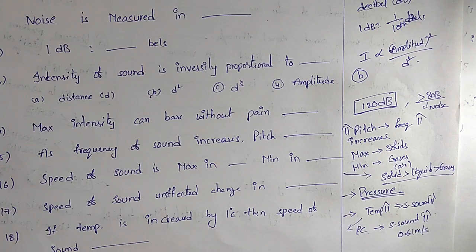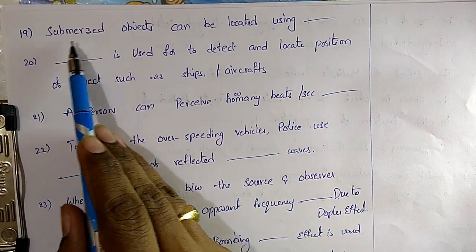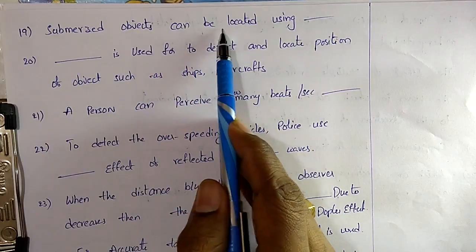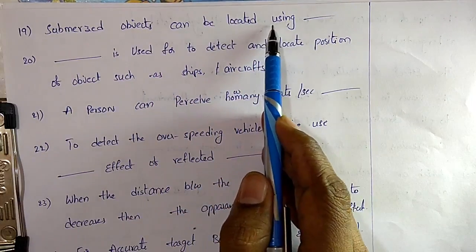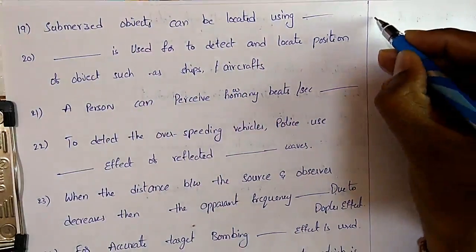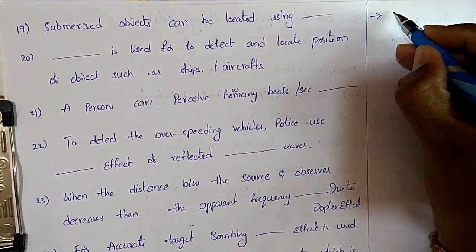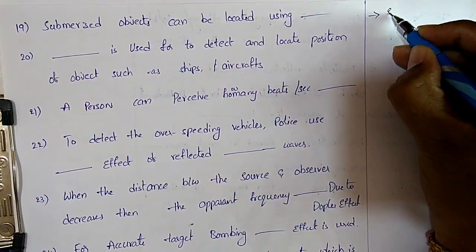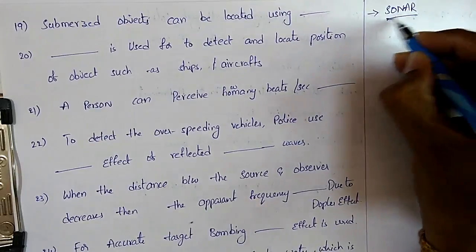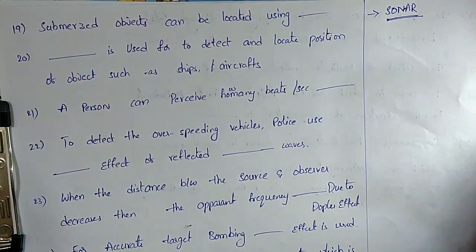Question 19: Submerged objects can be located using SONAR — that is the technique used to locate submerged objects.